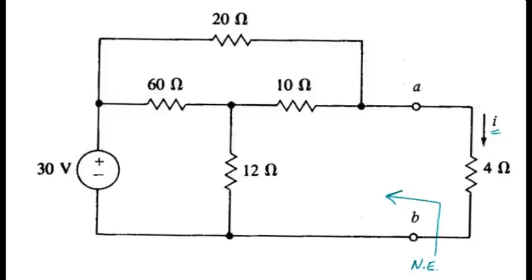First thing to do in terms of finding a Norton equivalent is we want to sever the connection there, and having done that, find the Norton resistance using the lookback method. We can do that because there are no dependent sources in this circuit. So, set that to zero volts and replace that by a short.